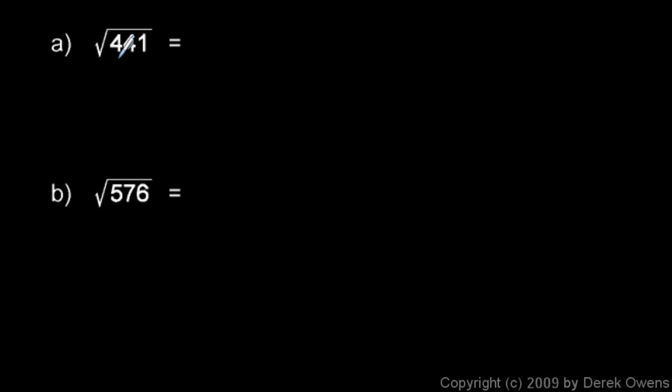There's a little trick you can use to see if a number is divisible by 3. You add up the digits, 4 plus 4 plus 1, and if the result that you get is divisible by 3, then the original number is divisible by 3. So 4 plus 4 plus 1 is 9, and that's a multiple of 3, so 441 is a multiple of 3.